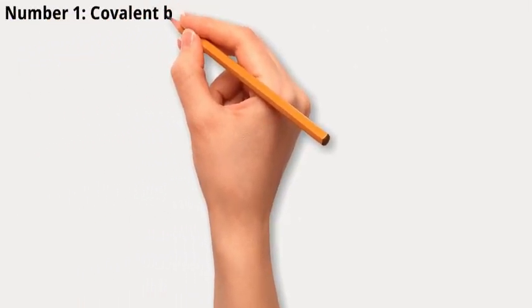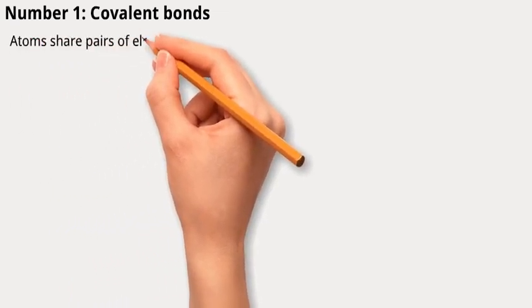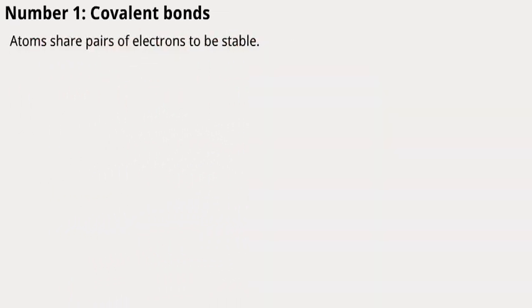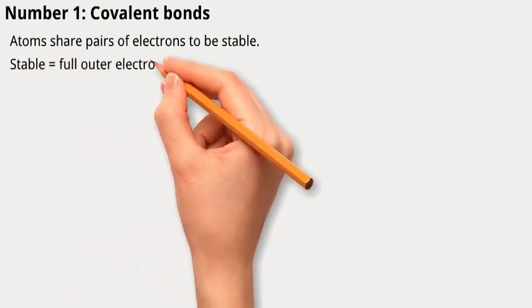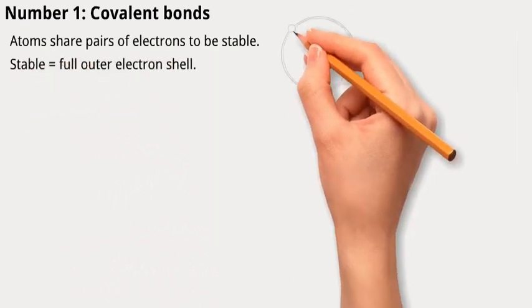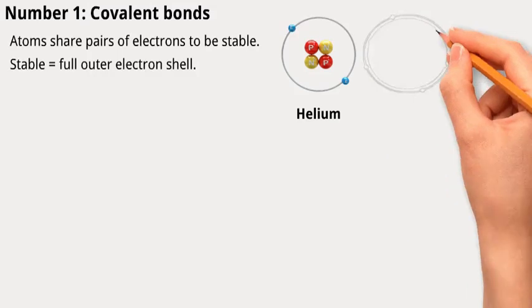Number 1: Covalent bonds. In a molecule, atoms stick together using covalent bonds where they share pairs of electrons. For an atom to be stable, it wants a full outer electron shell. Helium achieves this with two electrons, while others like oxygen need eight.